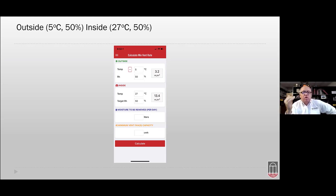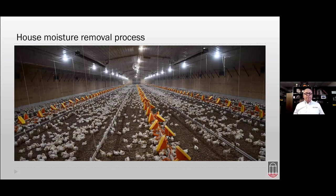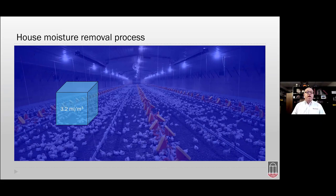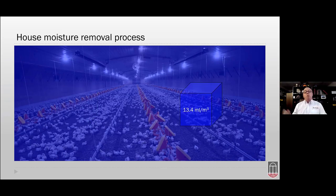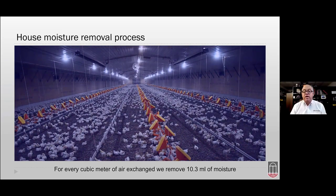Here's the moisture removal process: birds drinking 4,500 liters of water a day add moisture to air and litter. When we bring in one cubic meter of air, we bring in 3.2 milliliters of moisture, but we must exhaust one cubic meter as well — exhausting 13.4 milliliters. So for every cubic meter of air exchanged, we remove 10.3 milliliters of moisture.